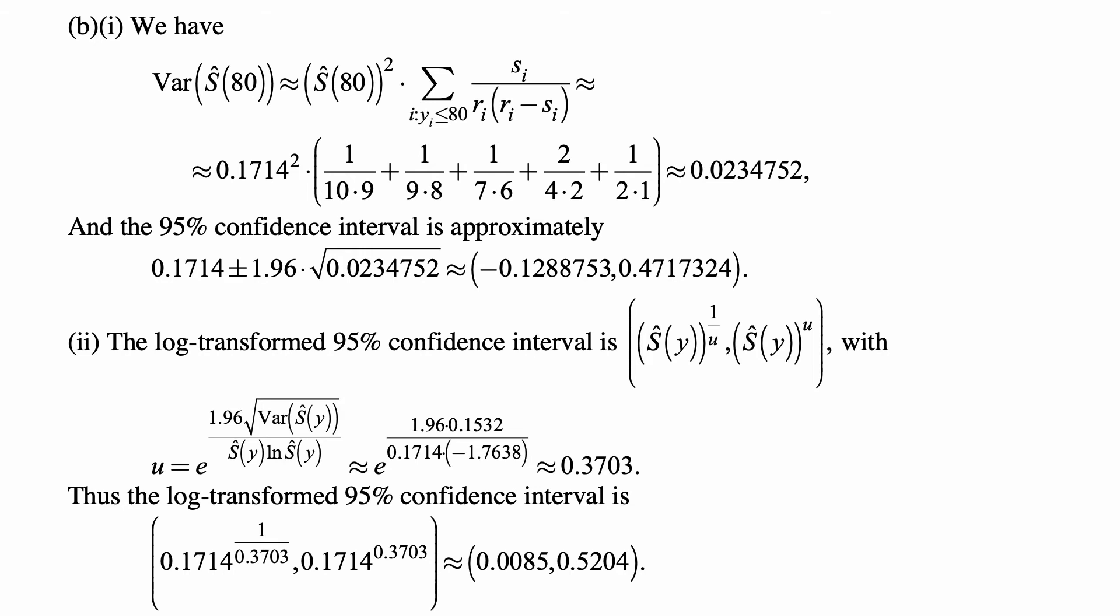Now, the log-transformed 95% confidence interval is S-hat(y) to the power 1/U and S-hat(y) to the power U, with U equal to e to the 1.96 times the square root of the variance of S-hat(y), divided by S-hat(y) times the natural logarithm of S-hat(y). And we plug in all those numbers, this comes out to be approximately 0.3703. And then the log-transformed 95% confidence interval is 0.1714 to the power 1/0.3703 to 0.1714 to the power 0.3703. That's approximately 0.0085 to 0.5204.